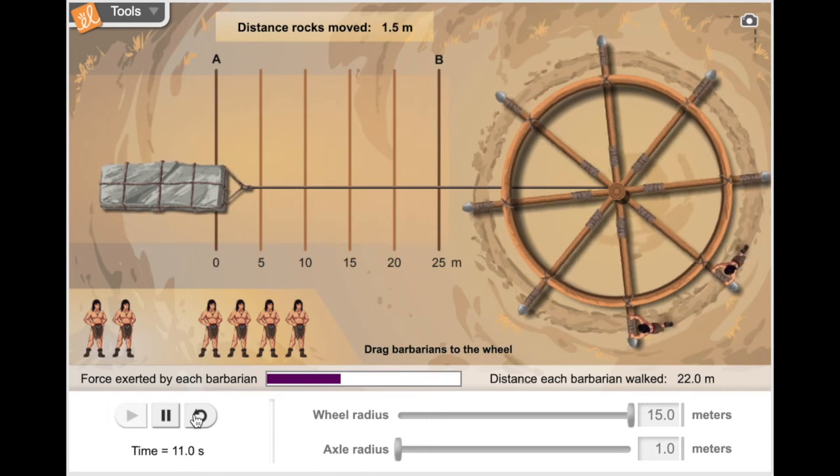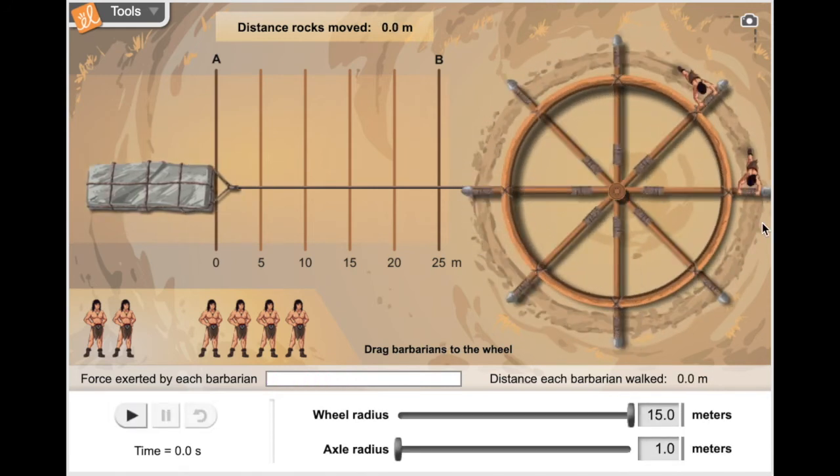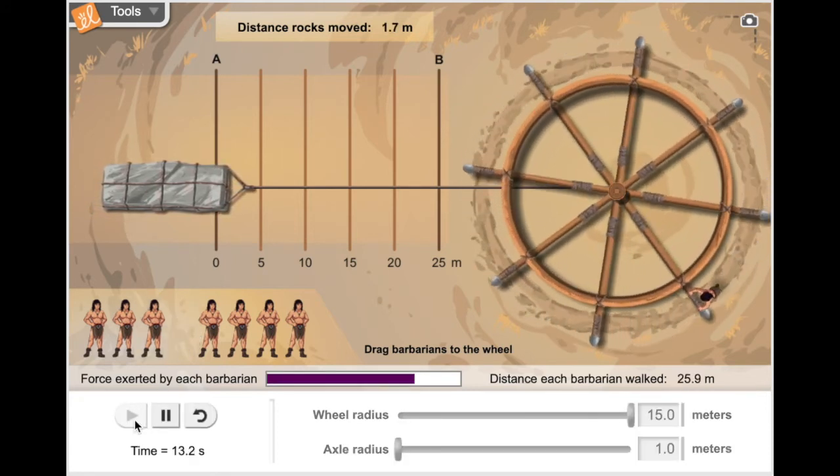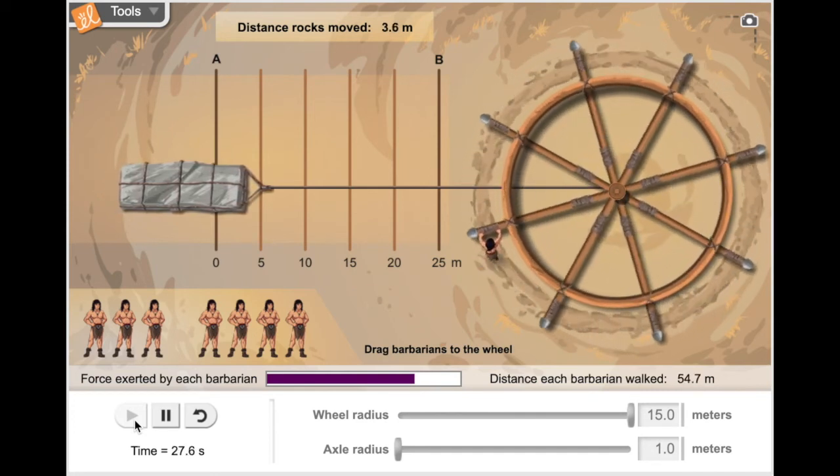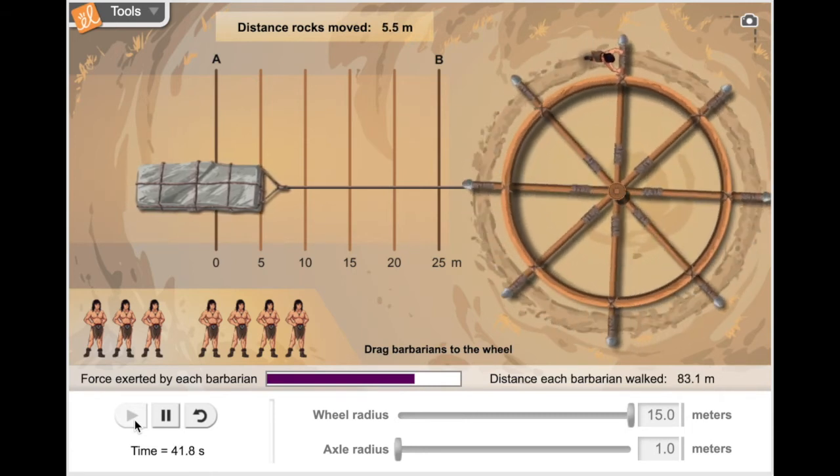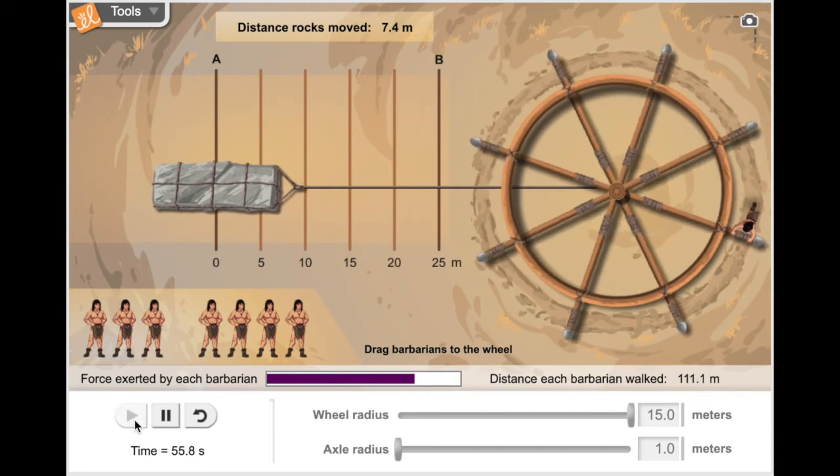Two barbarians can lift this load, but we want to find the minimum needed. Now one barbarian can move this rock all by himself because the wheel and axle is multiplying his force into a much larger output force that can then move that load.